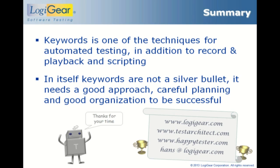The bottom line: keywords is one of the techniques for automation, in addition to others. I feel keywords are a must when you have either agile or big projects, but they are not a silver bullet. You really need the method I talked about — test design, holy grails, etc. — to make it successful. You need to organize it well: know when to do what and who to involve. And you need skills — understanding your testing techniques and tools. It is much more than just using keywords. I hope you enjoyed this talk.